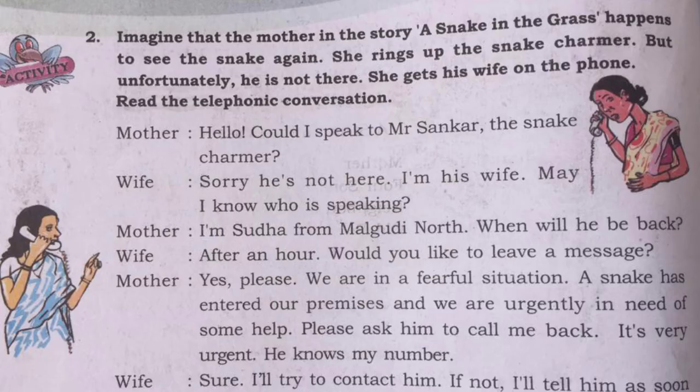Turn to the next page. Here is a telephone conversation. Imagine that the mother in the story 'A Snake in the Grass' happens to see the snake again. She rings up the snake charmer, but unfortunately he is not there. She gets his wife on the phone. Read the telephonic conversation.